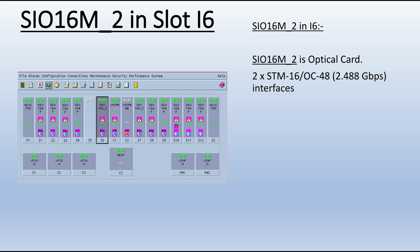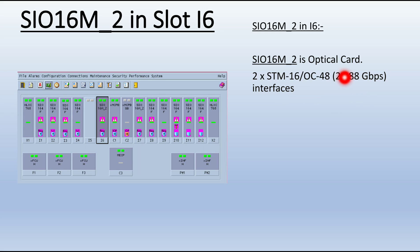SIO 16M2 card in slot I6. Slots I1 to I12 are the slots for optical modules or transponders, and a variety of cards can be inserted in these slots. The SIO 16M card in slot I6 is an optical card for 2x STM-16 or OC-48, or 2x STM-16 interfaces. There are two ports, each having a capacity of 2.5 Gbps.